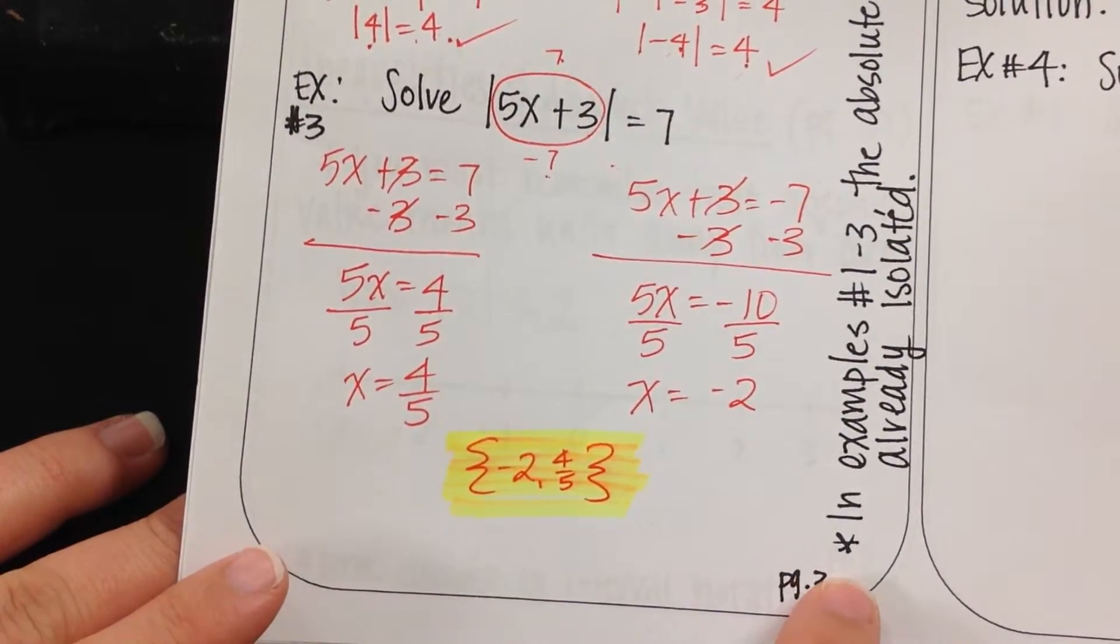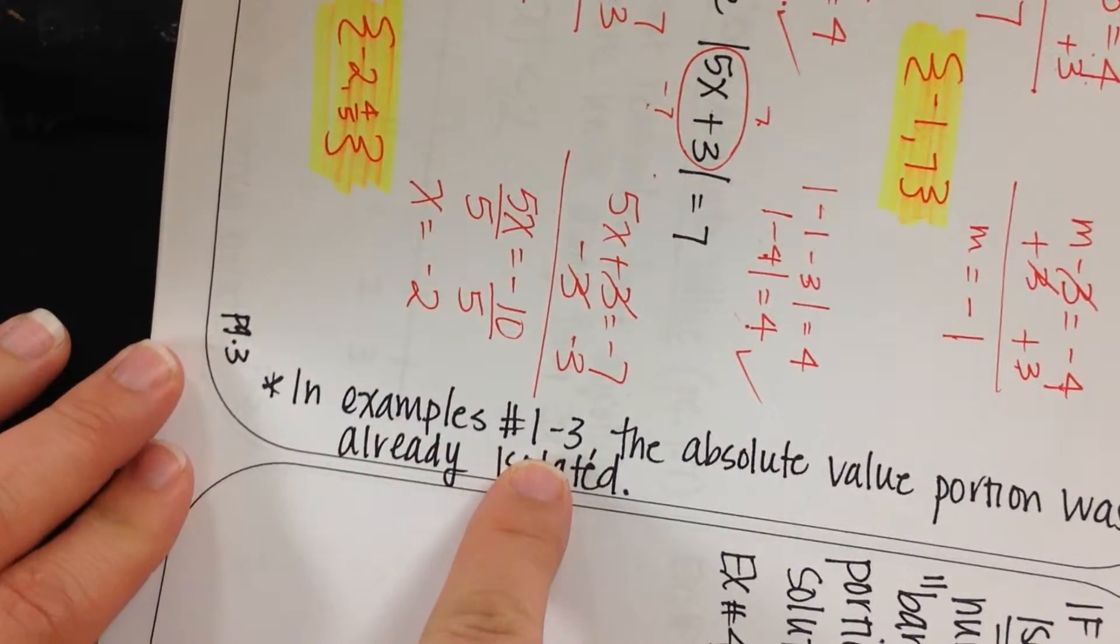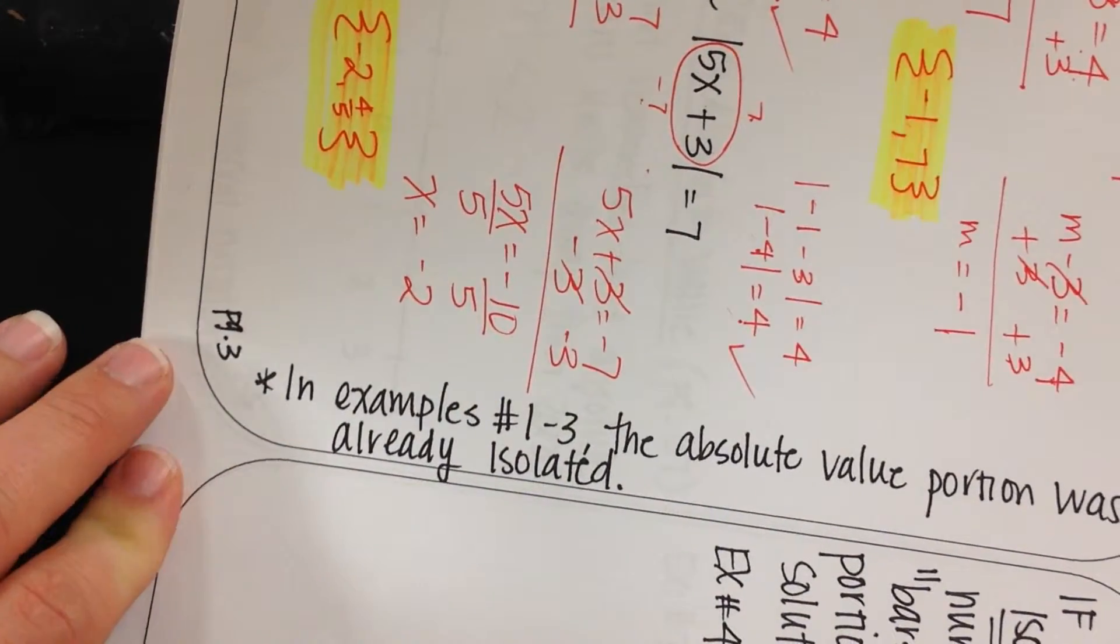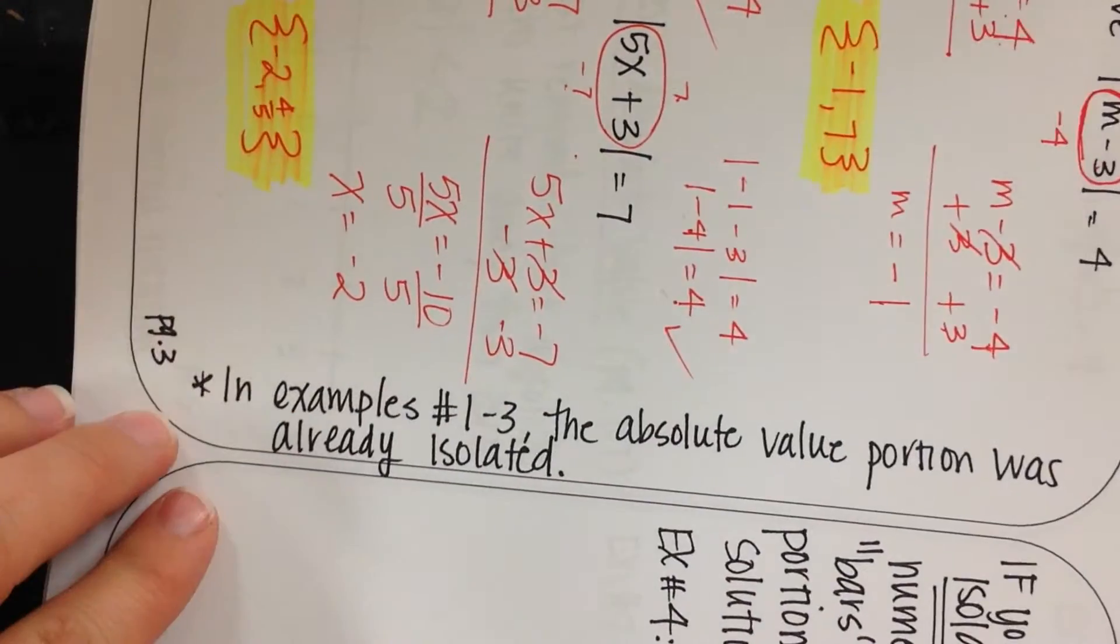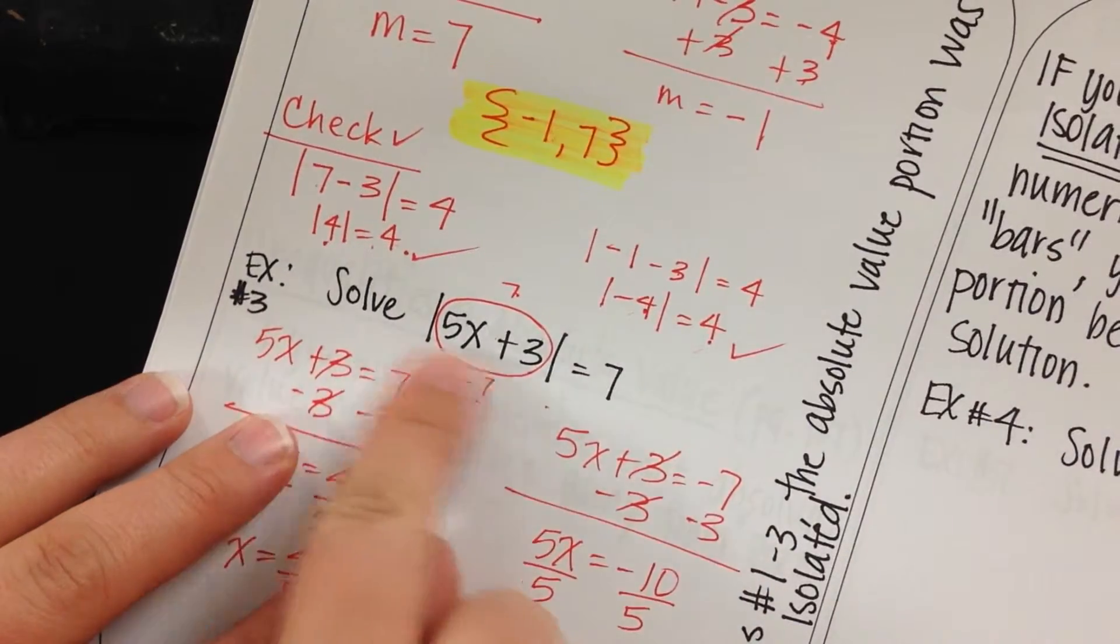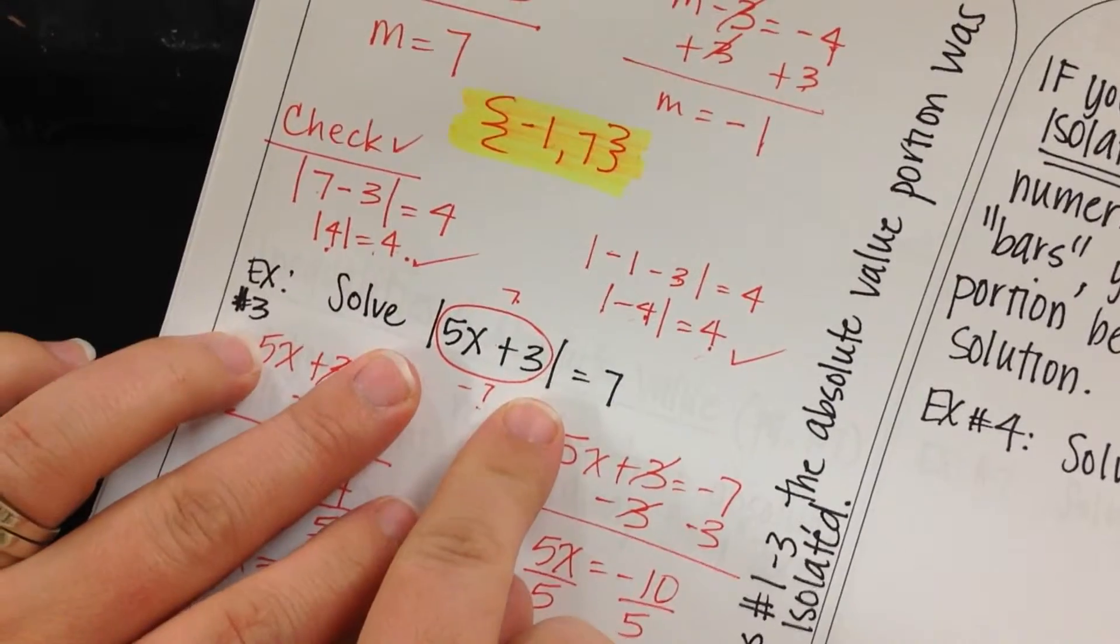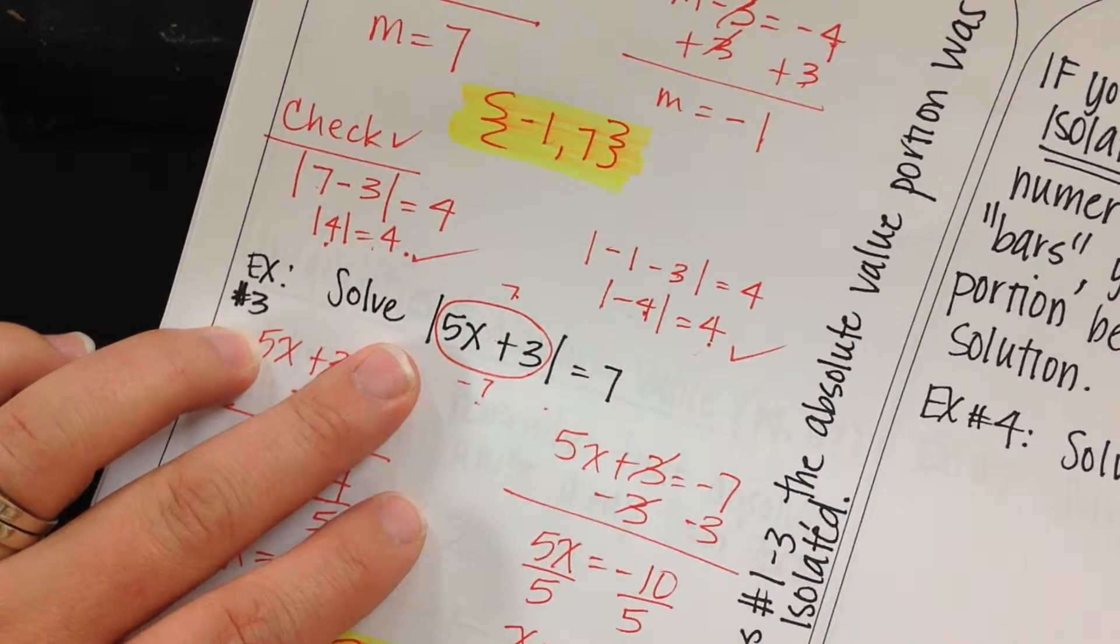I put in on the side over here a note. If you look at this, in examples 1 through 3, we just got done working number 3, the absolute value portion was already isolated, meaning our equation here had the absolute value bars on one side and it was equal to some number.